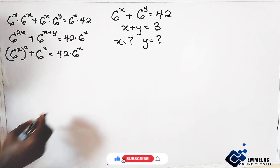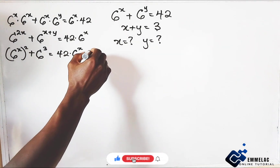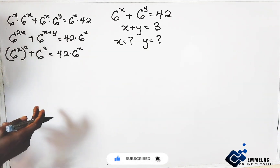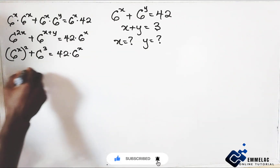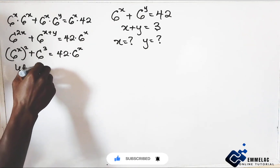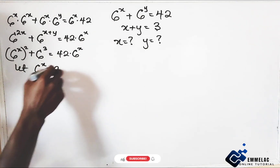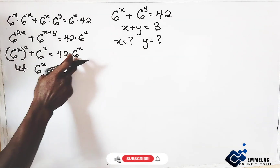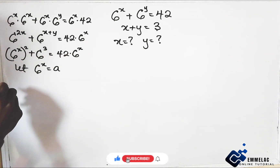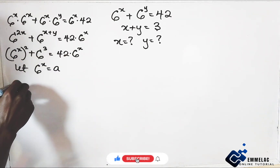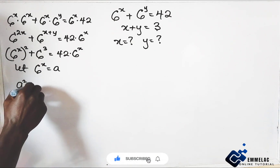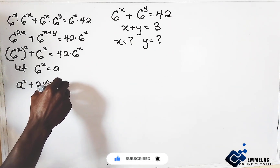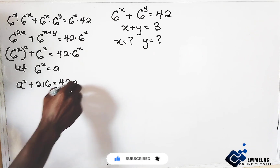We know that 6 to the power of 3 is 216. So let 6 to the power of x equal a, since we have a common sequence here. Substituting, we have a squared plus 216 equals 42a.